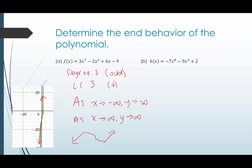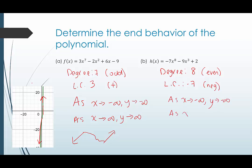In example b, h of x is written in standard form. The degree is eight and the leading coefficient is negative seven. The degree is even and the leading coefficient is negative. This means that as x goes to negative infinity, y goes to negative infinity, and as x goes to positive infinity, y also goes to negative infinity — because when the degree is even, the y-values go in the same direction on both ends.